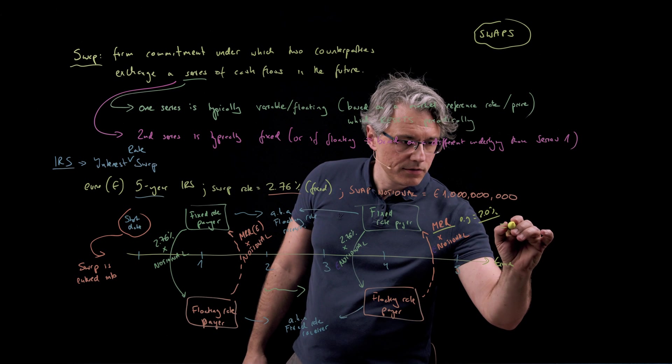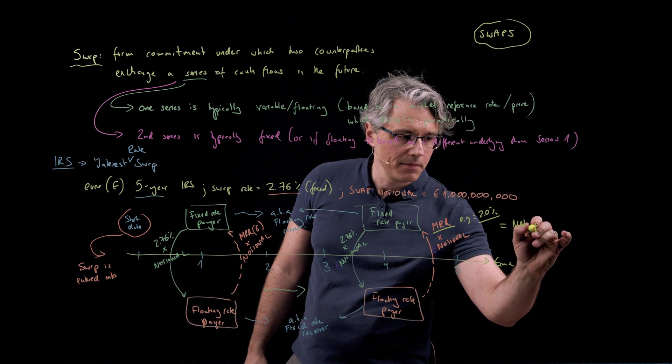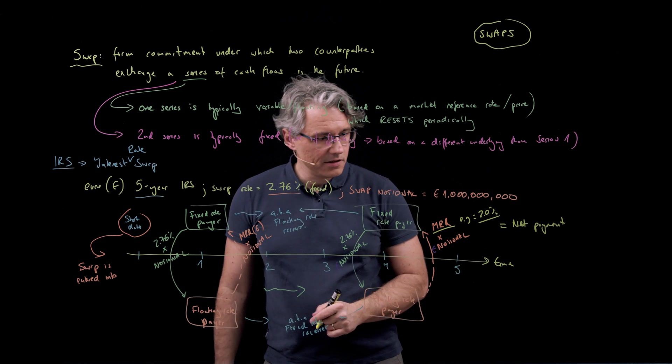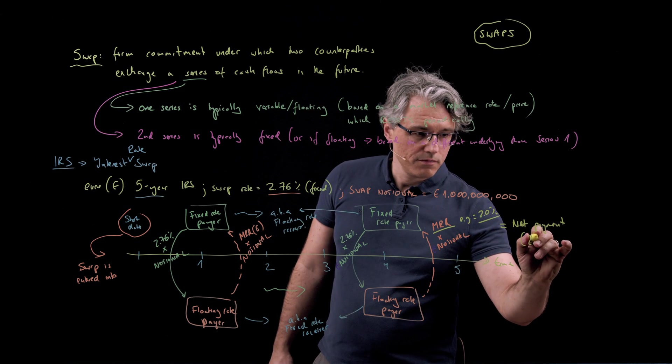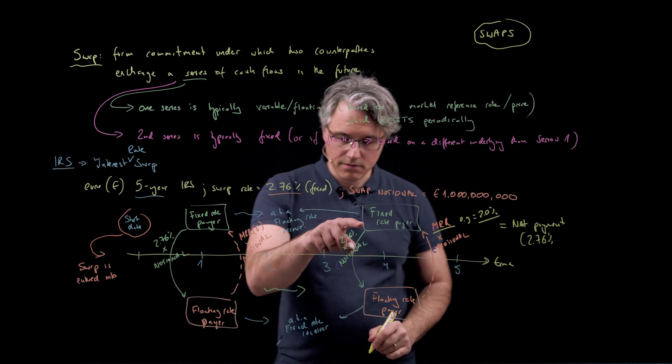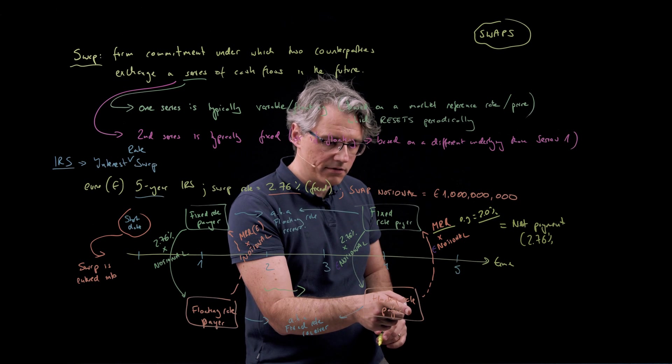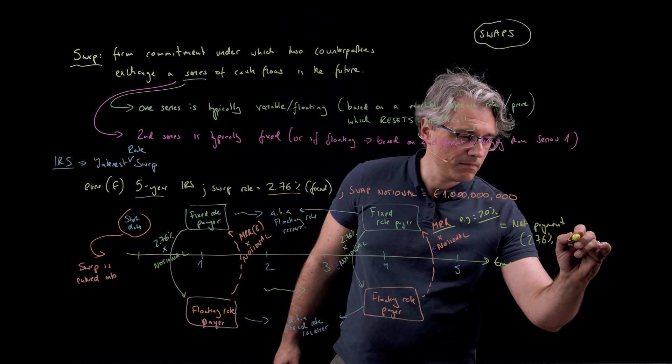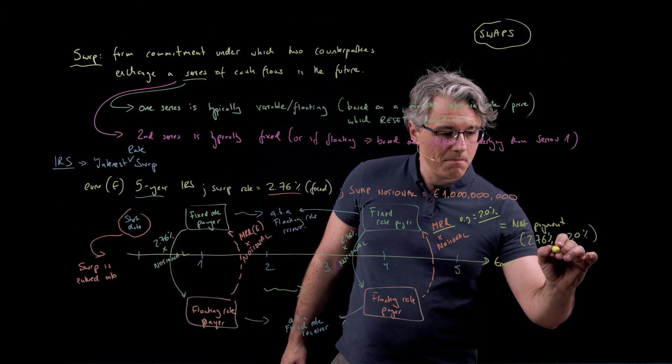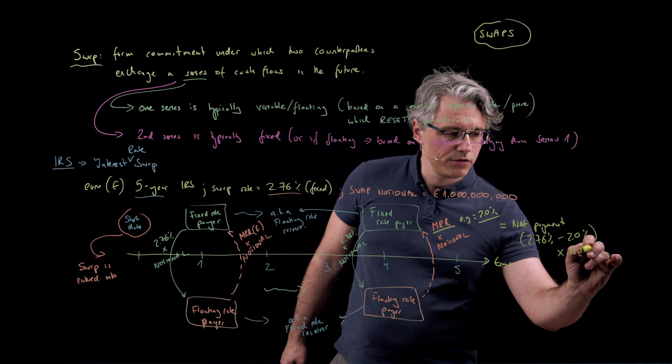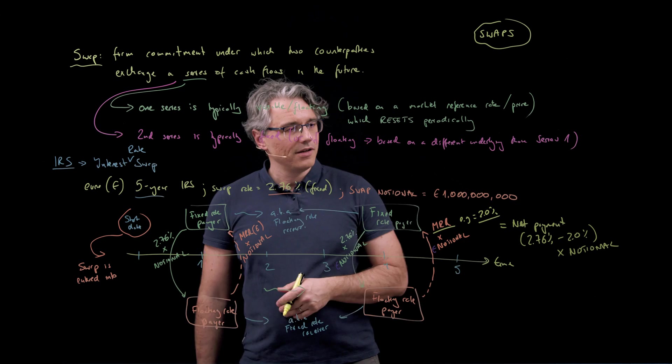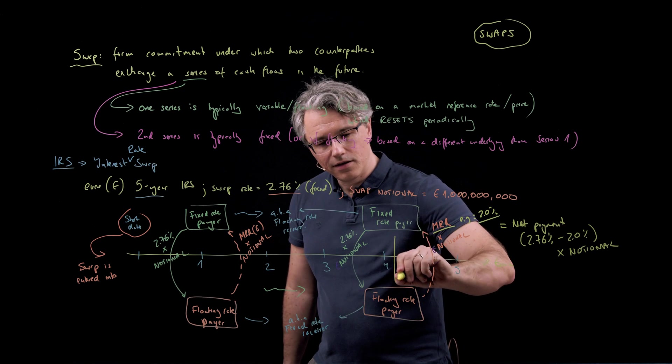So we're going to have net payments, and that net payment is obviously going to be the difference, 2.76% which the floating rate payer is supposed to receive and the 2% which they're supposed to base their payment on, multiply that by the notional, the 1 billion euros, and you get a net payment going this way.